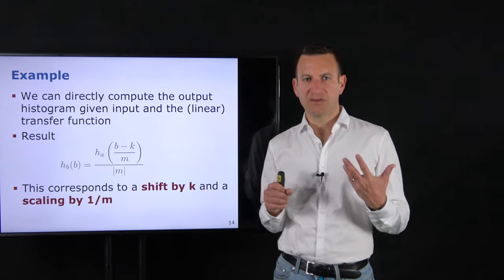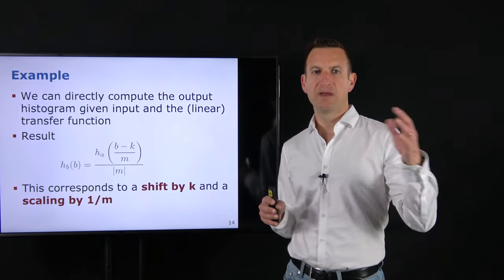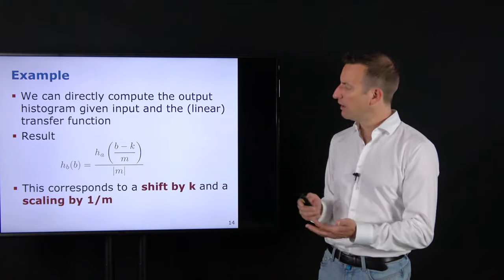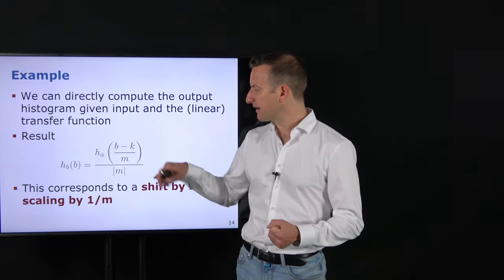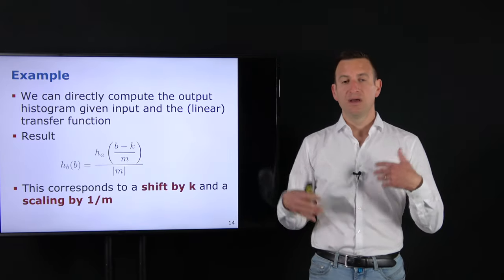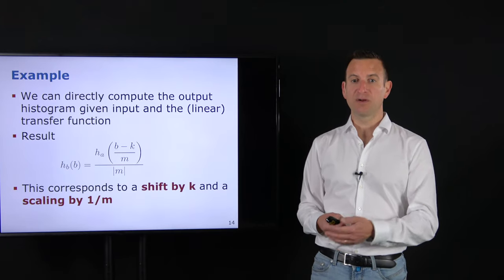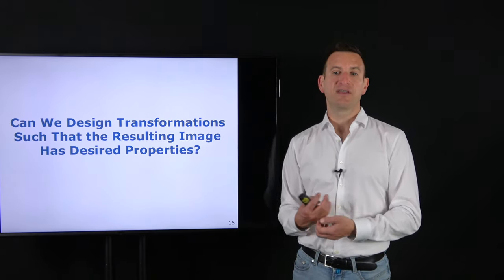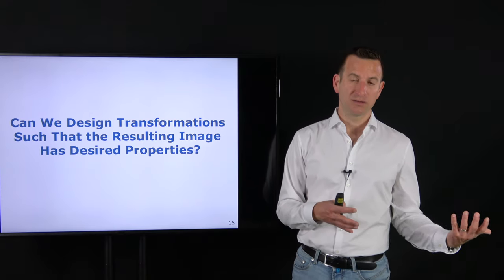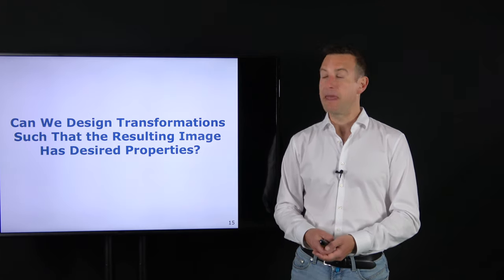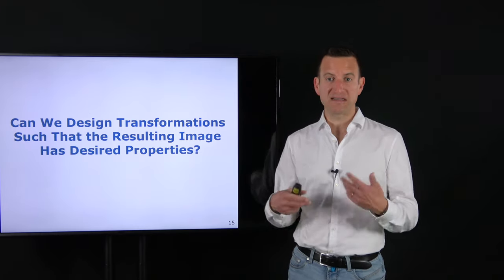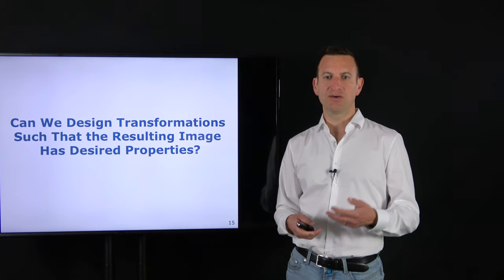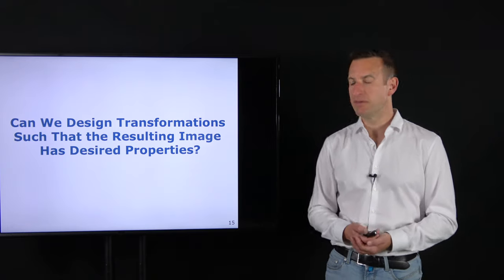We have now explained how to compute an output histogram given an input histogram and a transfer function F. We now want to use this information to design a function F — moving beyond the linear function — so that the output histogram has certain desired properties. The key question is: in which way can we design transformations F such that the histogram of the resulting image has certain desired properties?